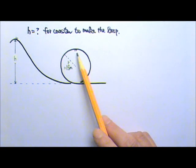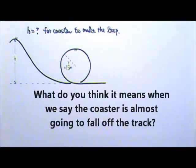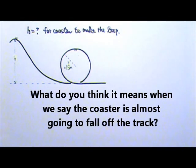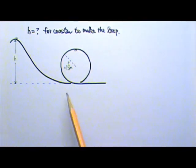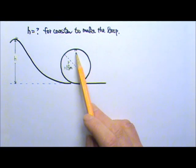And what do you think it means if I say the coaster is almost going to fall off over there? It means the coaster is almost losing contact with the track, which means it's almost losing the contact force. The normal force on the coaster is zero.